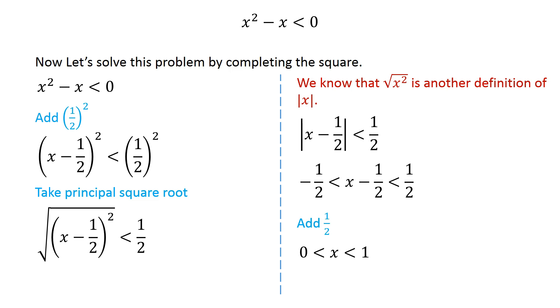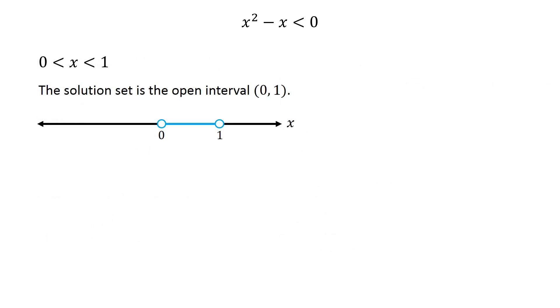This implies that the quantity x minus 1 half lies between negative 1 half and 1 half. Adding 1 half to this inequality we get x is greater than 0 and less than 1. Therefore, the solution set of this inequality is the open interval from 0 to 1.